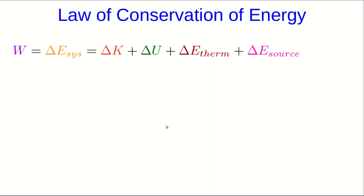This is our law of conservation of energy, at least as we saw it in first-year physics. The work is the change in the system energy, and that change can be due to changes in kinetic, potential, thermal, and source energy.